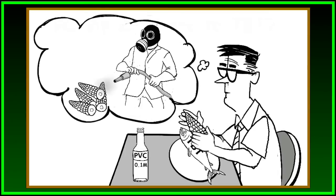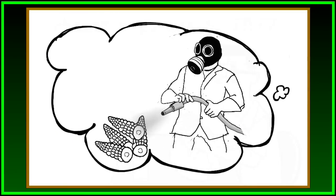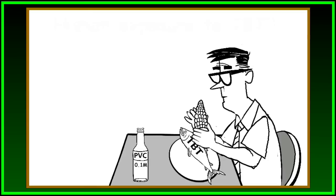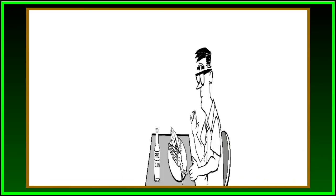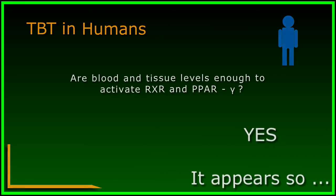Perhaps most insidiously, organotins are still used in the U.S. as fungicides and miticides on a variety of crops, such as nuts, stone fruits, and grapes. Organotins are not very water-soluble, so they stick avidly to the crops they are applied to, and as a result, find their way into us. We know that the average blood and tissue levels in humans, insofar as they've been measured, are right in the range needed to activate RXR and PPAR gamma. So it appears that human exposure to organotins can reach levels that activate the high-affinity receptors we've been discussing in this module.